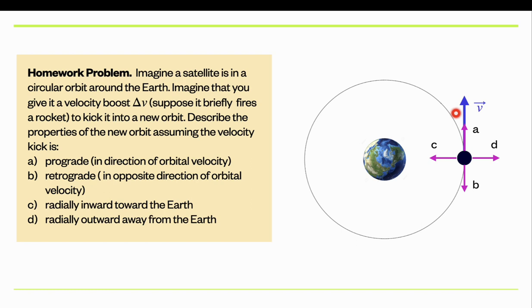So the question is: what happens? If you increase the speed at this point, is it going to stay in a circular orbit or turn into an elliptical orbit? What would the characteristics of that orbit be — larger period or smaller period? If you fire thrusters in the opposite direction to slow the satellite down, the velocity will be less and you need to determine what happens. The other two cases involve firing thrusters so that there's also a new velocity component added radially inward or outward.